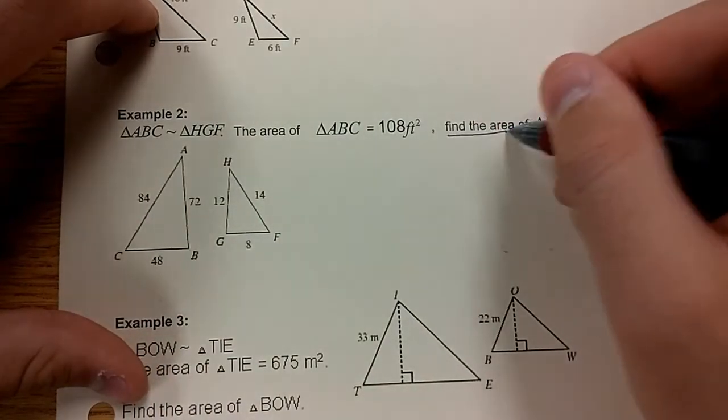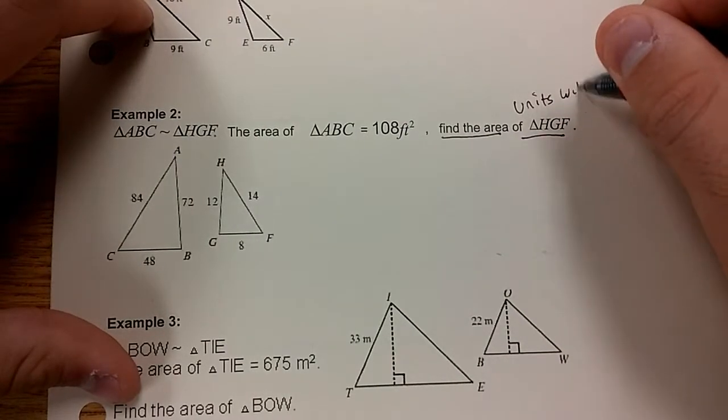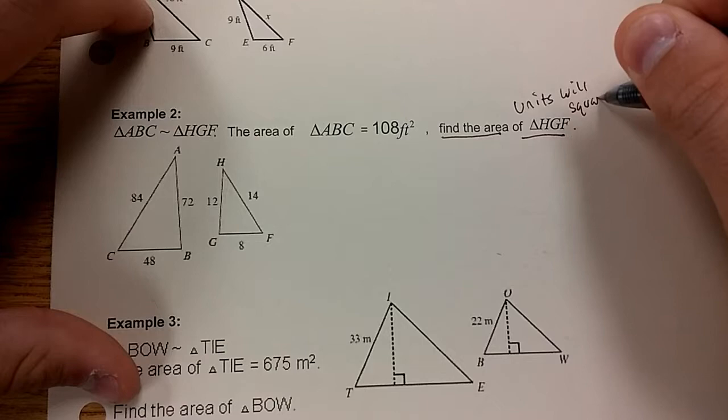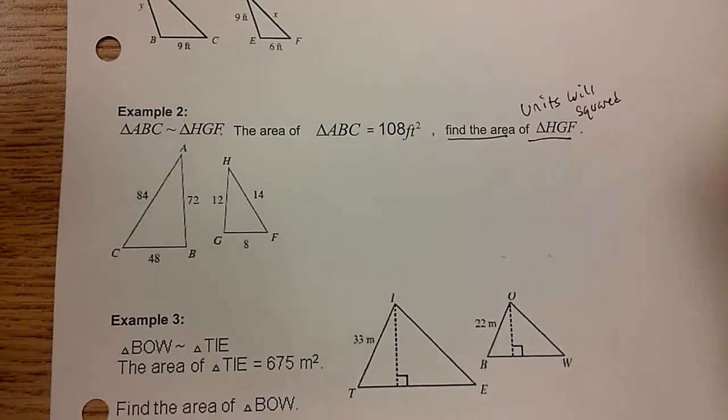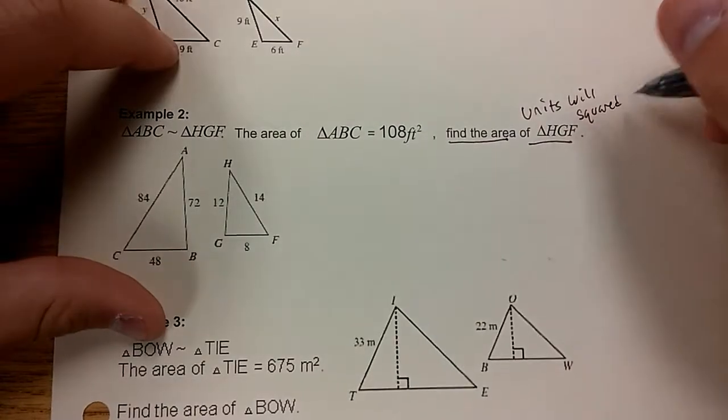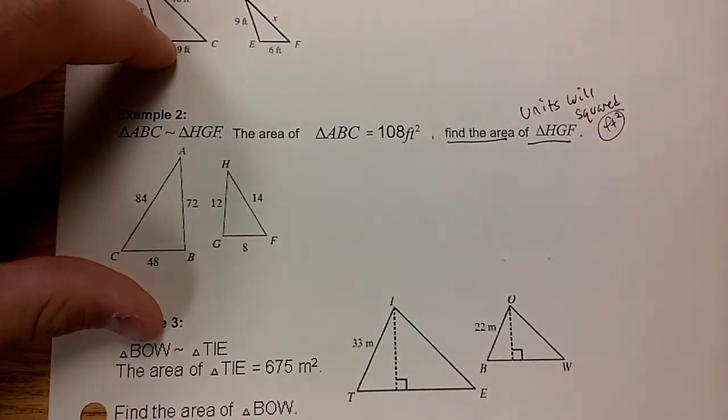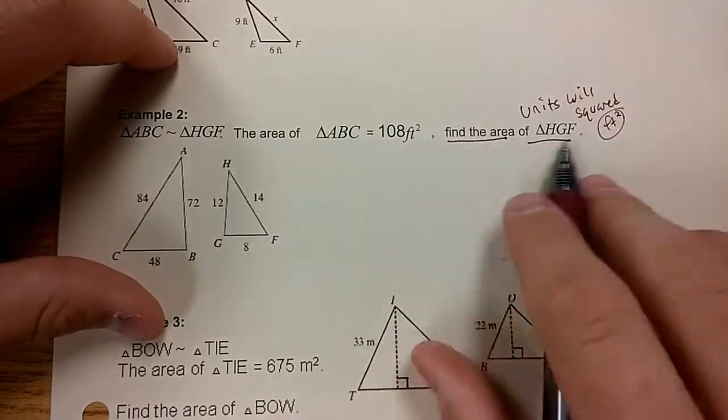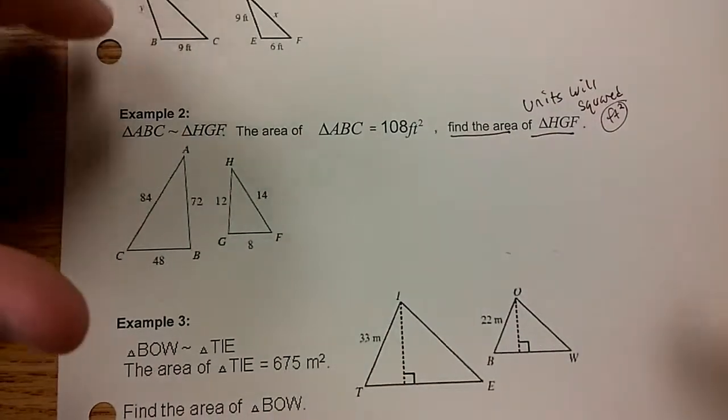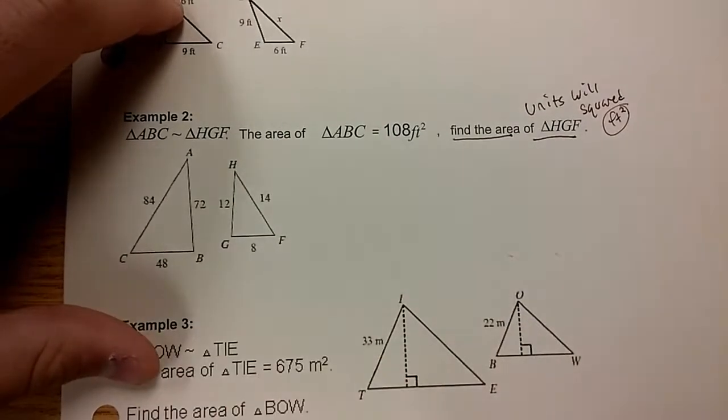If you're finding the area of a triangle, remember that your units will be squared. Feet squared, meter squared, whatever. In this case, it is feet squared, so units will be squared or feet squared. If I need to find an area, I need an area ratio. I currently don't have any ratio of areas, but I do have what's called a side length ratio.